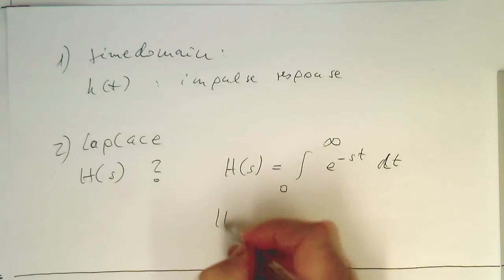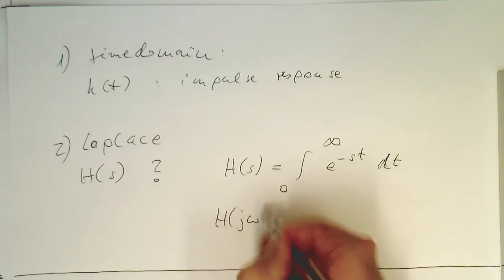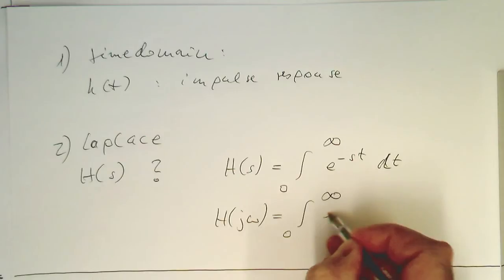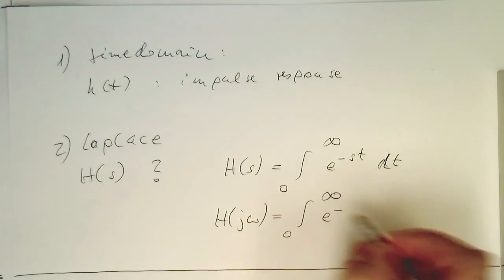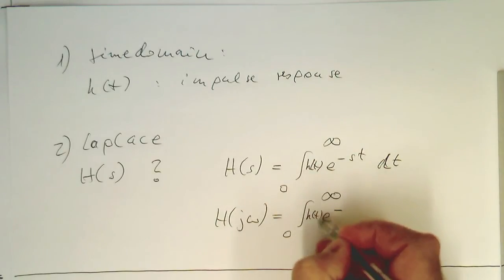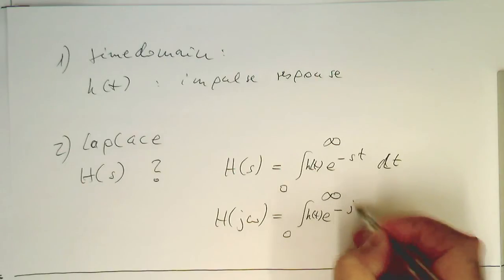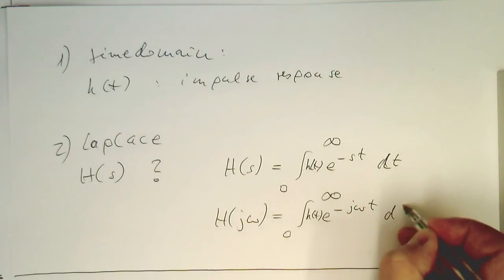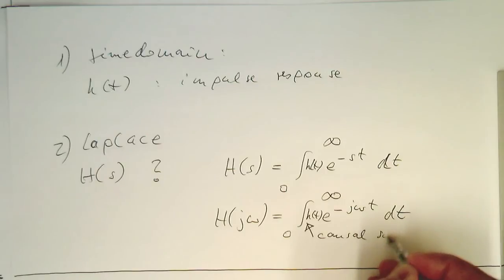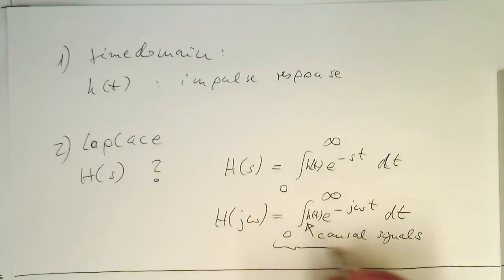Remember, if we are substituting now just in j omega here, then we are getting E to minus - oops, there's the H of t missing here - E to minus j omega t dt here. This looks like a Fourier transform, and because we have causal signals, this is actually a Fourier transform here, in this case.